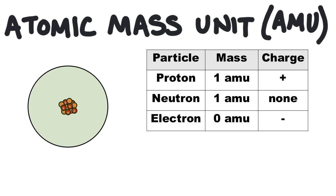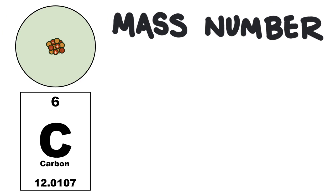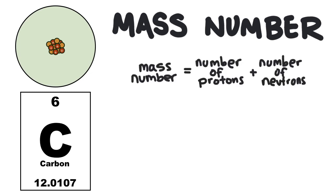So the mass of an atom, or in other words, its mass number, comes down to the number of protons and neutrons since they both have a mass of one AMU. A carbon atom has six protons and six neutrons and six electrons. What's its mass number?